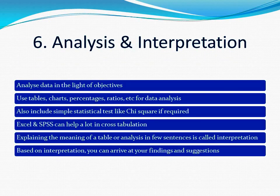Step 6: Data analysis and interpretation. Analyze data in the light of your objectives. Research is a sequential process — there must be a link from beginning to end. You set certain objectives, your questions lead to those objectives, and then your analysis also leads to those objectives. You can use tables, charts, percentages, ratios, and averages for data analysis. You can also include simple statistical tests like chi-square if required and suitable for your data.